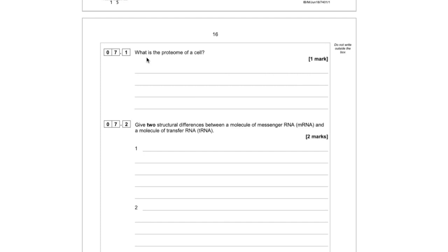Question 7 is all about protein synthesis. For the first part, we've been asked to define the proteome of a cell. This is something you should have learned that's directly on the specification. The proteome of a cell is the full range of proteins that a cell is able to produce.